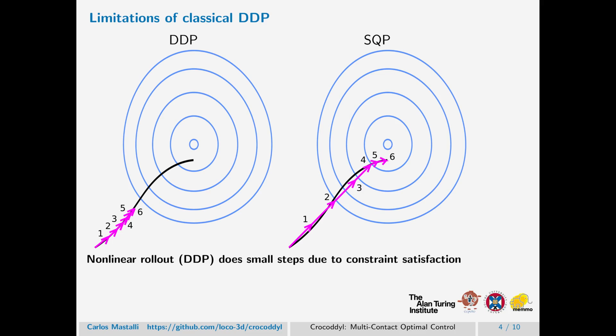And in conclusion, it produces a much worse convergence rate when you compare with non-linear programming algorithms such as SQP.